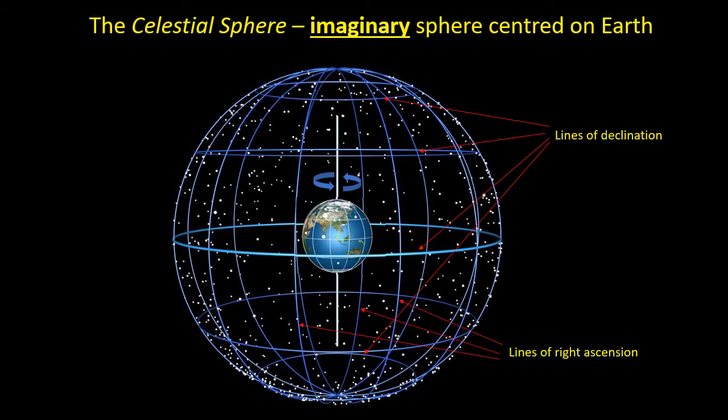Astronomers use a system called celestial coordinates where all celestial objects — including the Sun, the planets and the stars — are given a position on an imaginary sphere known as the celestial sphere surrounding the Earth. The latitude is known as the declination, and the longitude is the right ascension. The Sun moves in the path shown on the celestial sphere. The line of zero right ascension, shown as the green line, is the Sun's position at the March equinox.